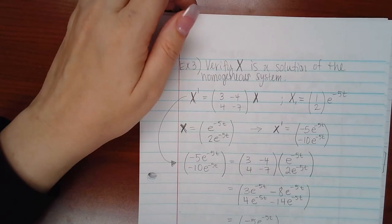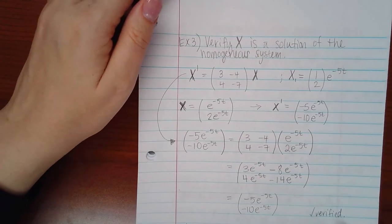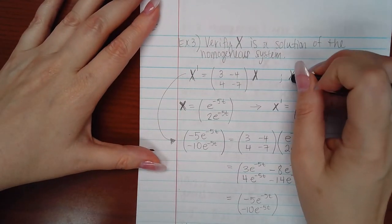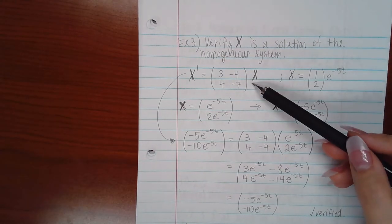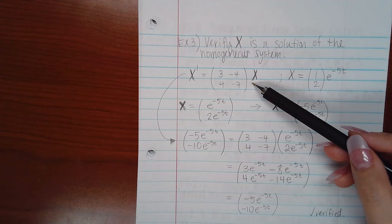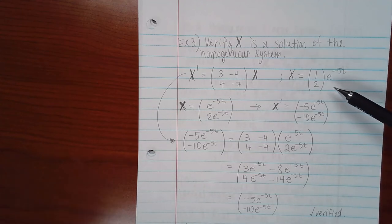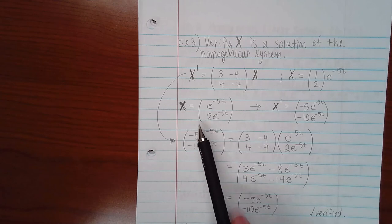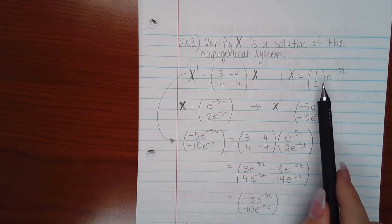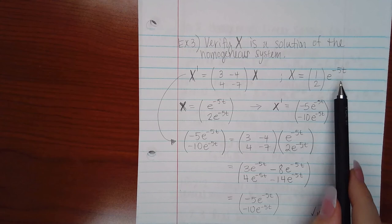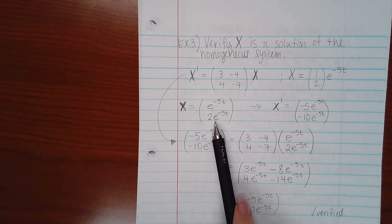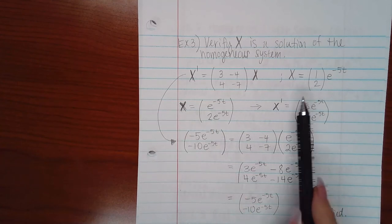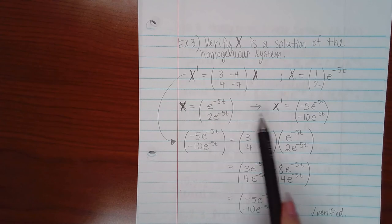Now, this problem just wants us to verify that the X that they gave me is, in fact, a solution. So this is the X they gave me, and this is the system of DE's they gave me. So what I did was I had a little thinking step. First thing I wanted to do was write this as a matrix, not as a matrix times something. So I went ahead and did 1e to the negative 5t and 2e to the negative 5t. That's just another form or way of writing X, which was given to me.